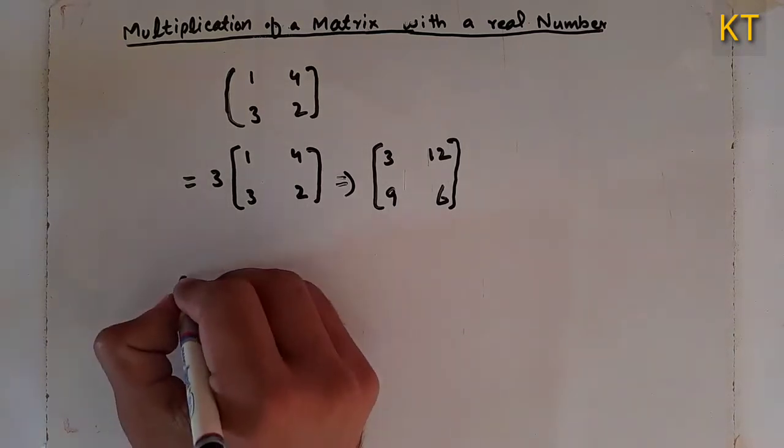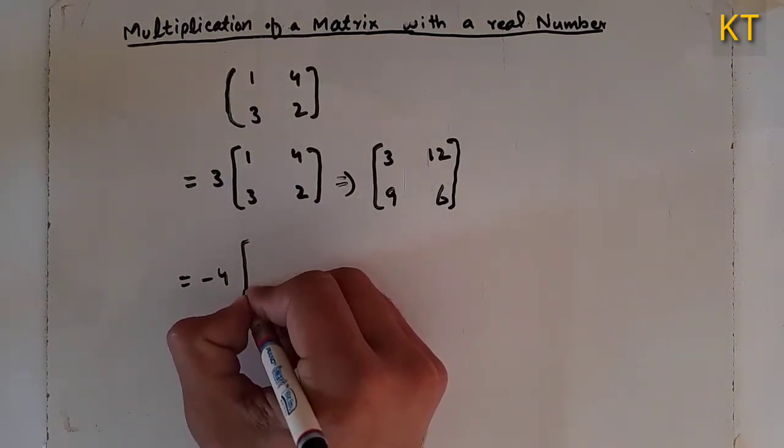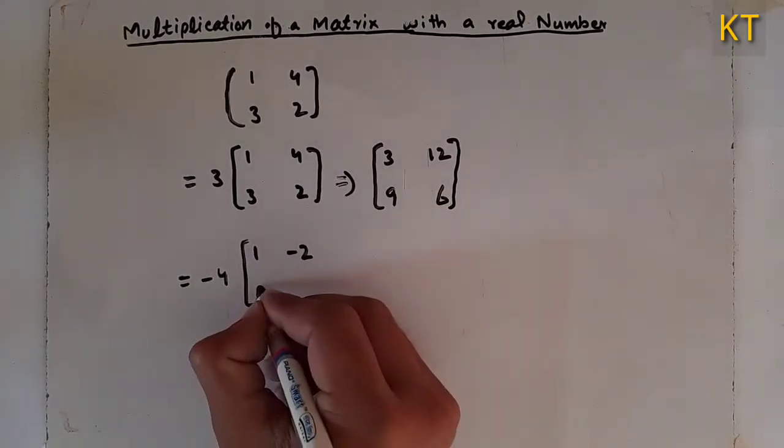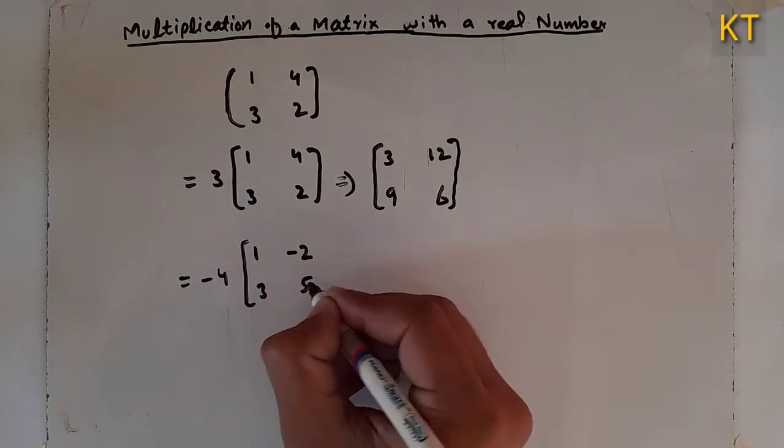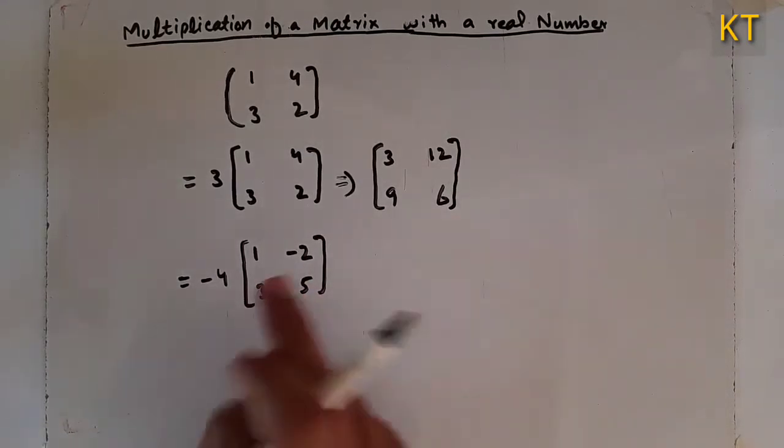The matrix will be minus four. The matrix will be multiplied. One, minus two, three, five. The matrix will be multiplied.